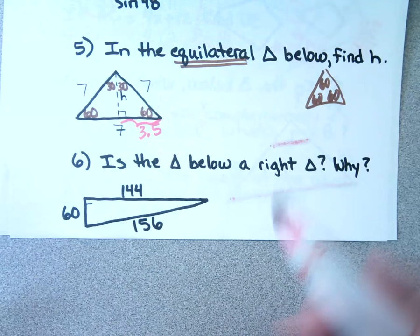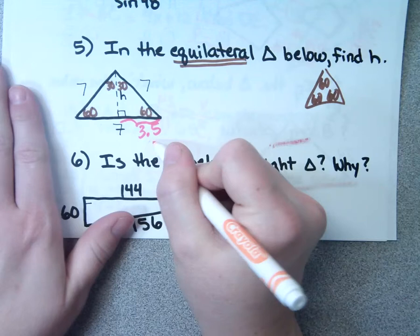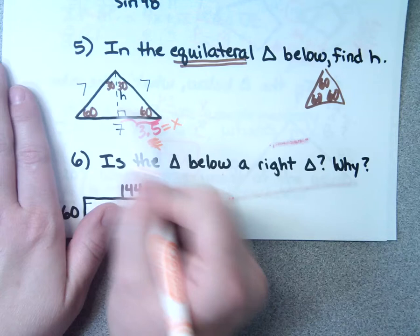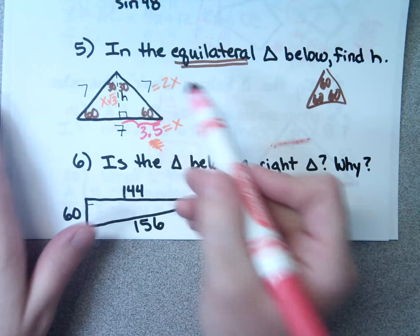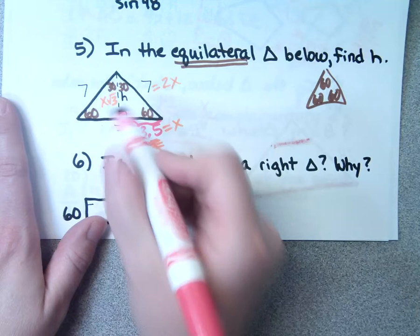This bottom piece equals X. Across from the 60, I label X√3. And across from the 90, I label 2X. Do I know X? My X is 3.5, since 2X = 7. So the height would be X√3, which is 3.5√3.